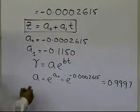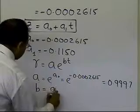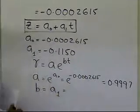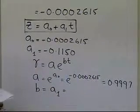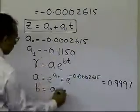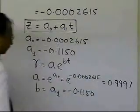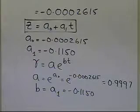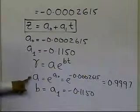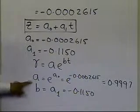And then if you look at b, b is nothing but a1, and a1 turns out to be nothing but whatever this number a1 is, minus 0.1150. So what you have been able to do is, by transforming the data, you have been able to find the constants of the exponential model a and b.